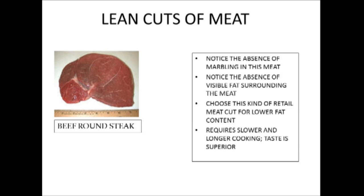Rather than cuts of meat with a lot of marbling, you want to go for lean cuts of meat. Here's an example of beef round steak — this has very little marbling, but it is also a meat that's a lot tougher. Choose this kind of retail meat for the lower fat content; it requires a slower and longer cooking process, but the taste actually becomes quite superior through a braising process that is slow.